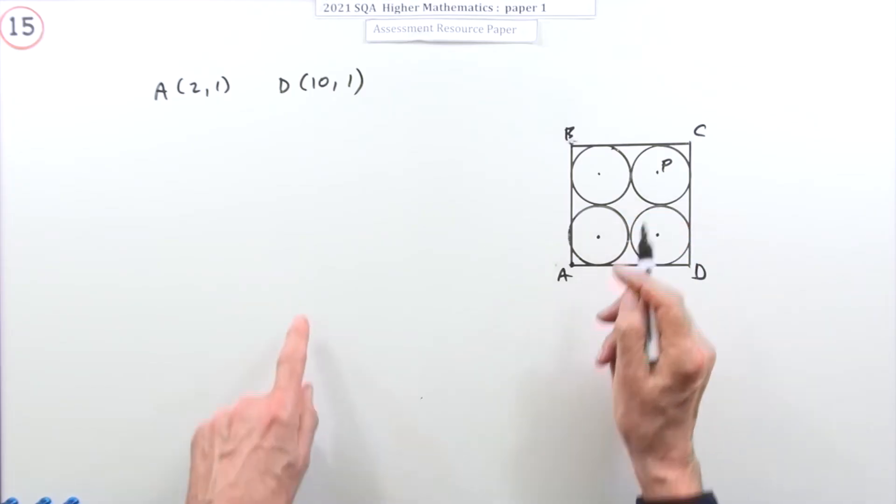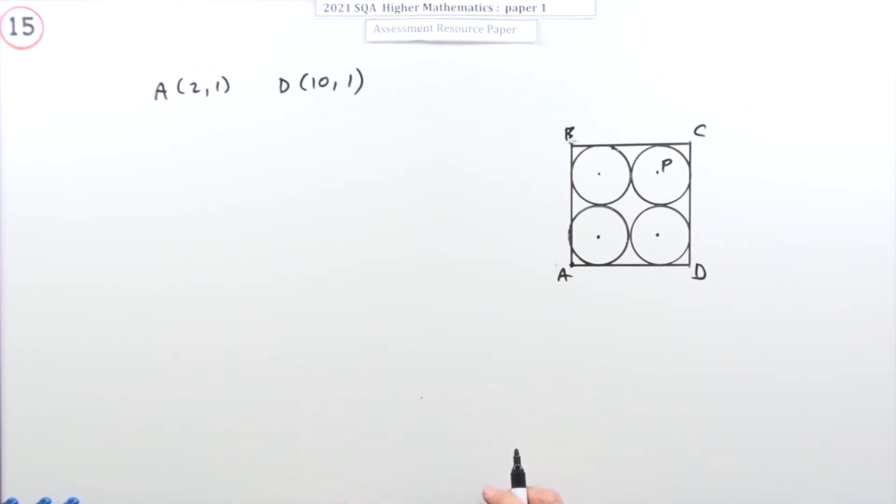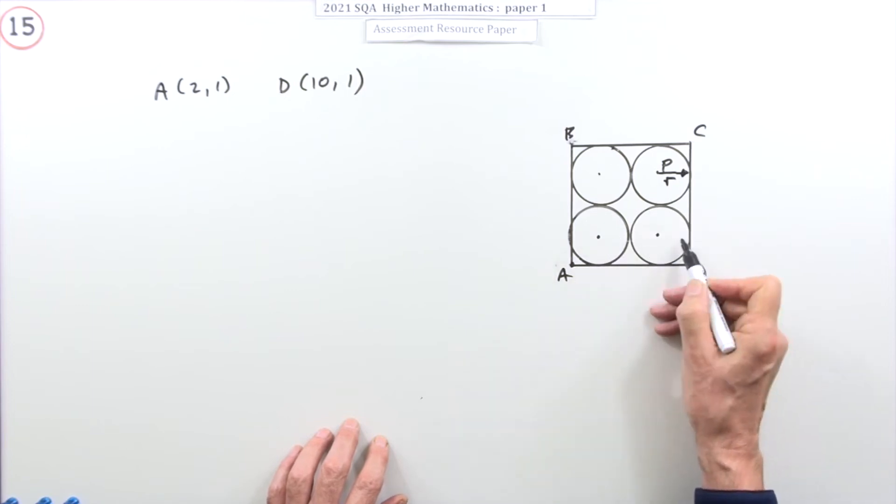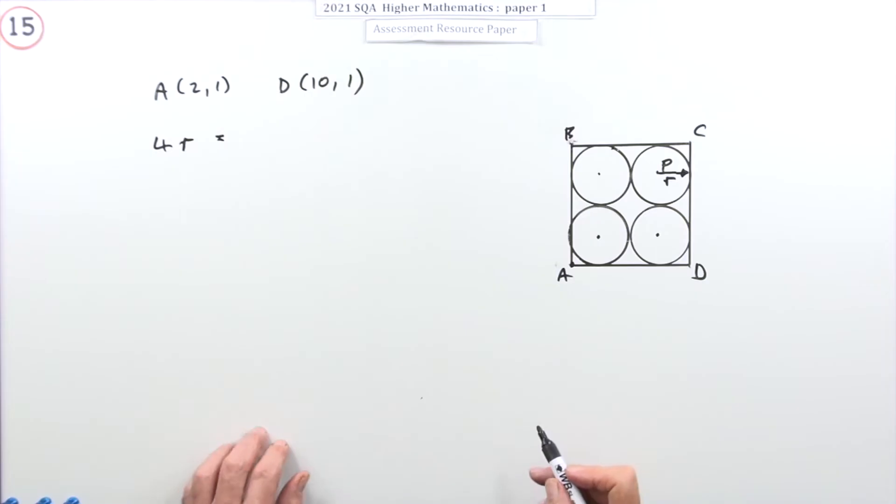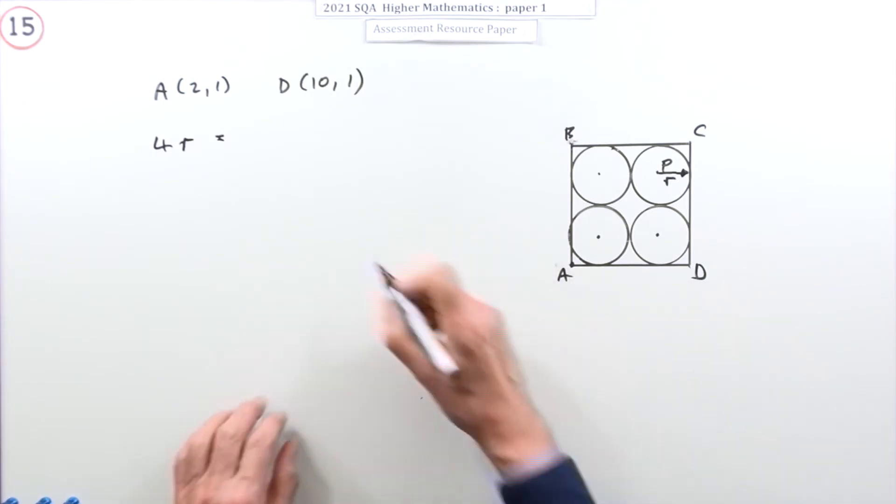To get the equation of a circle, you need the coordinates of its center and you need its radius. We'll probably get the radius first of all, because you know the distance from A to D. That distance, if I call that the radius, there'll be four of them. So I can make this statement: Four lots of the radius will make up the distance from A to D, which is from 2 to 10.